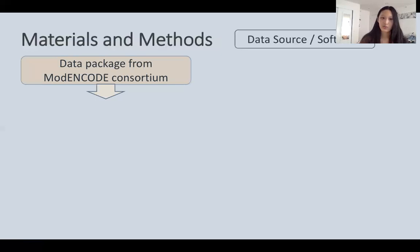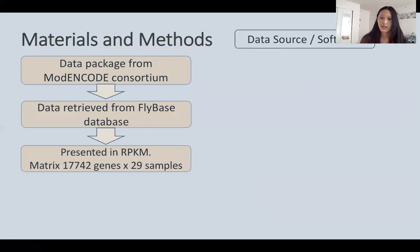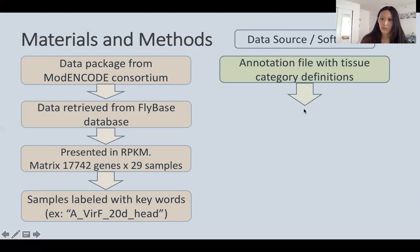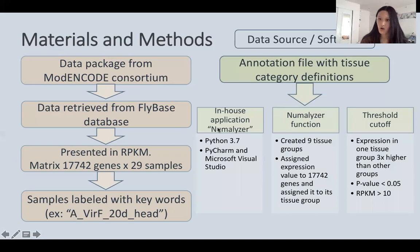The data package was originally sourced from the ModEncode consortium and retrieved from the FlyBase database, presented in a matrix of RPKM showing expression of different genes across respective samples. Samples were labeled with keywords — for example, a sample taken from the head of an adult, female, virgin fruit fly, 20 days of age. These keywords created an annotation file with tissue category definitions coded into NumMalizer. Originally coded in Python 3.7 and tested on Python 3.8, NumMalizer created nine tissue groups and assigned expression values to over 17,000 genes based on this annotation file.